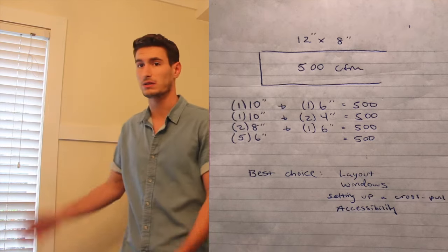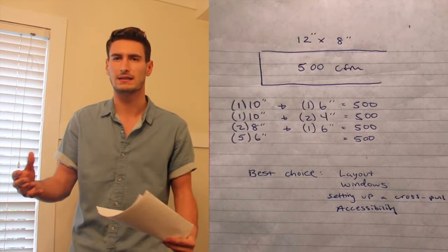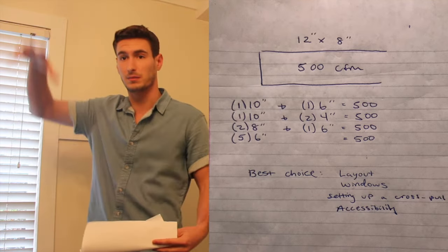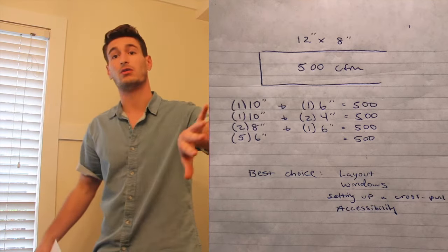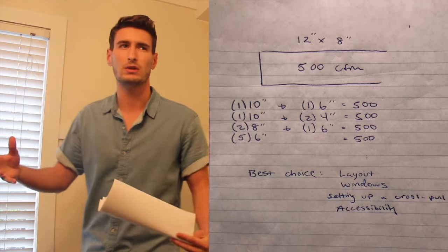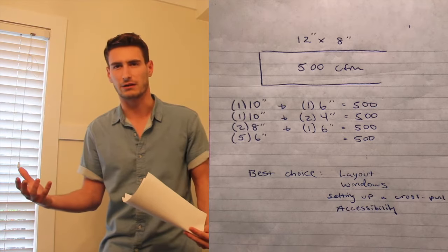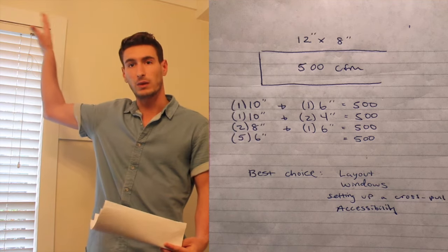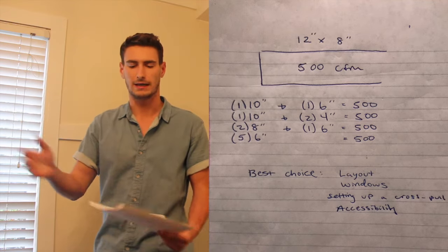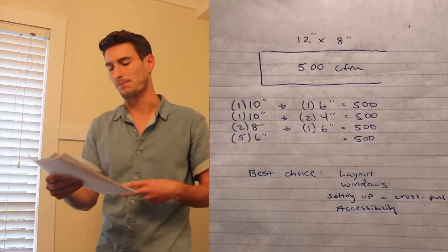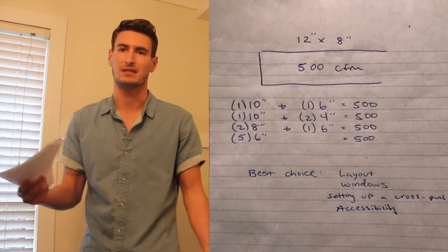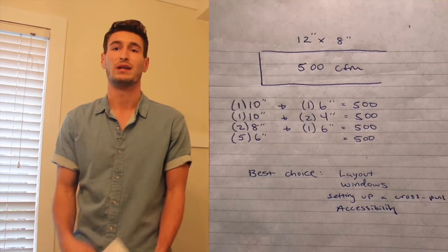Windows is another big one. The whole idea behind duct design is to set up a nice cross pull that pulls the air from the supply to the return across the room. And the reason I brought up the windows is you want to always try and put supplies near heat infiltration areas. So if we put a supply right here above the window, it's going to input air and block out the heat as it's coming in through the window. So windows, layout, trying to set up that cross pull for the airflow and then accessibility, those are going to be the main determining factors when laying out your ductwork.